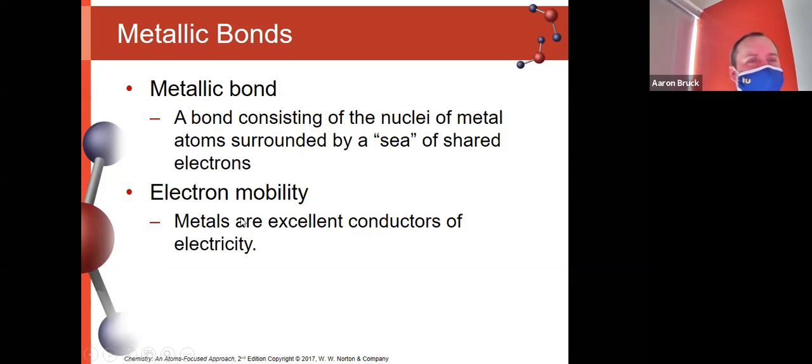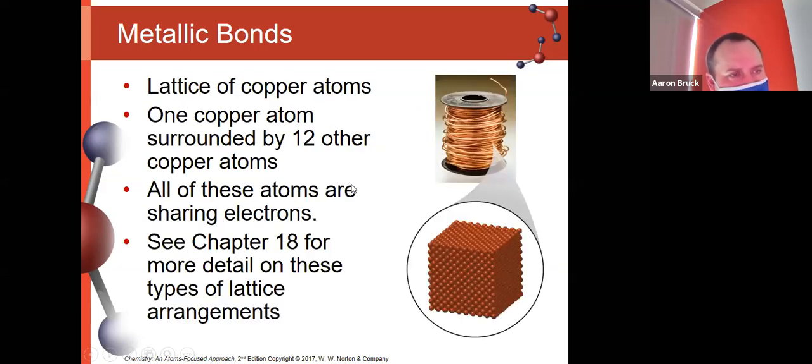Talked about this already with metallic bonds. Metallic bonds are formed through that sea of electrons and we get a good conductivity as a result of that. And like I said before, if you're really interested in this and you have to take Gen Chem 2, Chem 106, we'll talk much greater depth about this in that course.